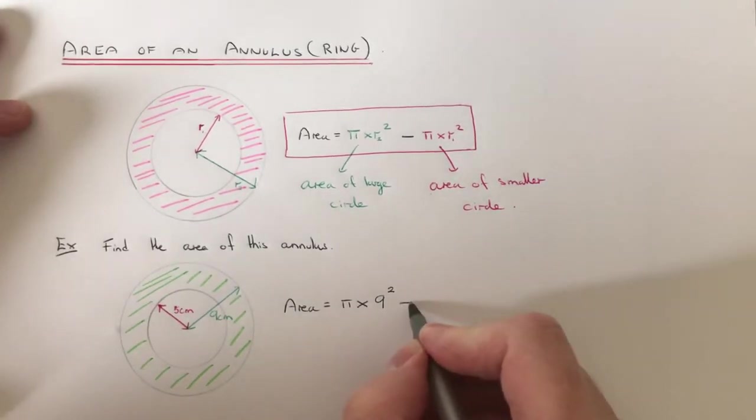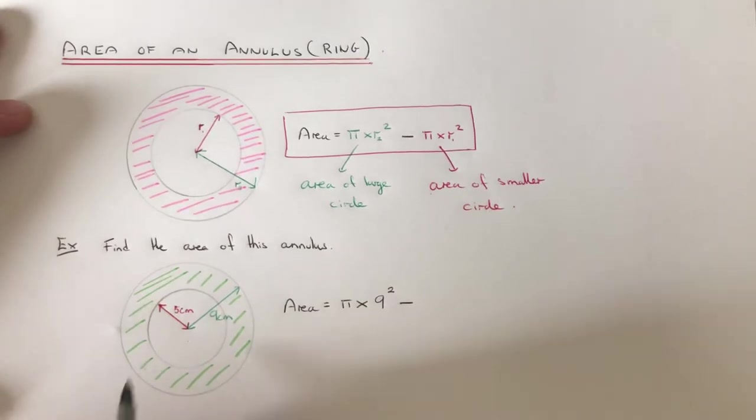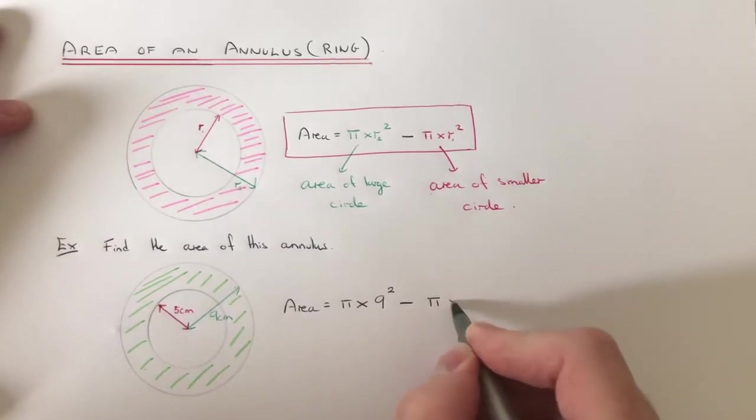And then we have to subtract the area of the smaller circle. So the smaller circle has a radius of 5, so again, we put this into pi times r squared.